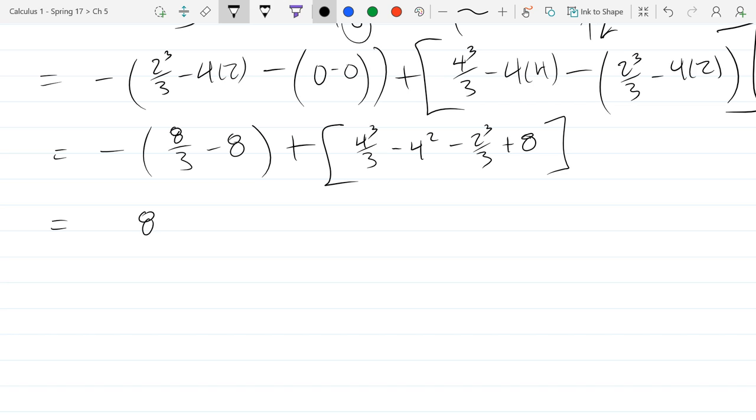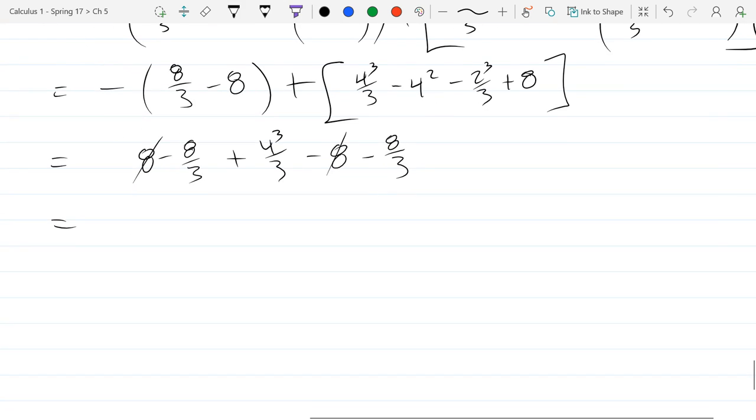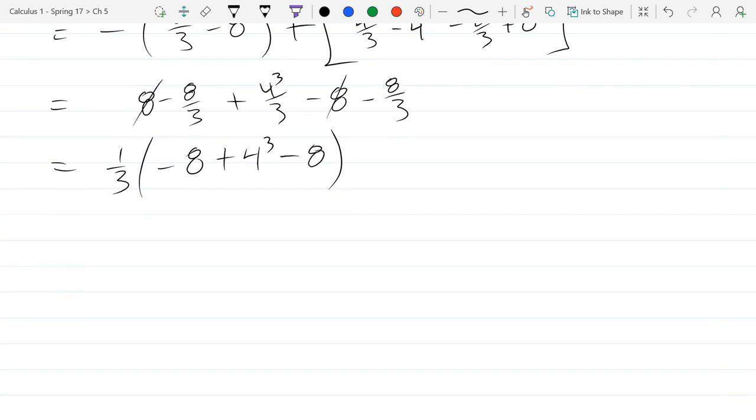So we have 2 cubed over 3 minus 4 times 2 minus 0 minus 0 plus 4 cubed over 3 minus 4 times 4 minus, plugging in 2, 2 cubed over 3 minus 4 times 2 and switch the square brackets on the second one. So we have 8 minus 8 thirds plus 4 cubed minus 16 plus 8 is minus 8, minus 8 thirds.